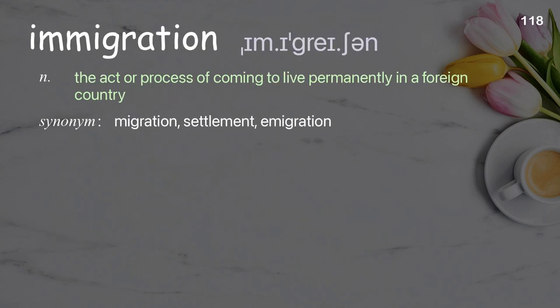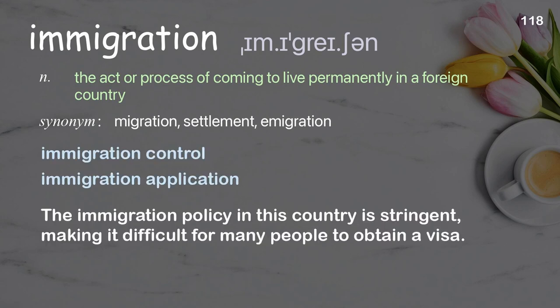Immigration. The act or process of coming to live permanently in a foreign country. Examples: immigration control, immigration application. The immigration policy in this country is stringent, making it difficult for many people to obtain a visa.